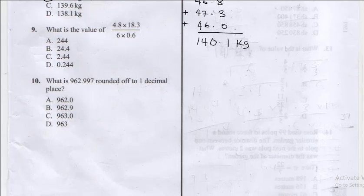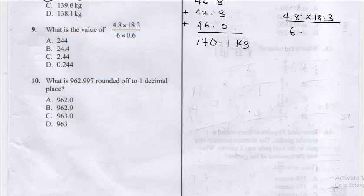Okay, so this is going to be 4.8 times 18.3 all divided by 6 times 0.6. The best way to do this is to take out the decimal places.